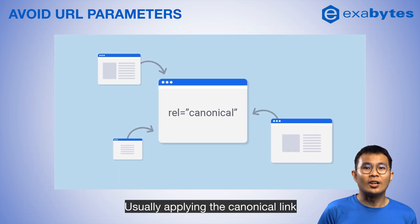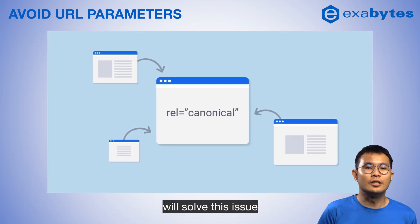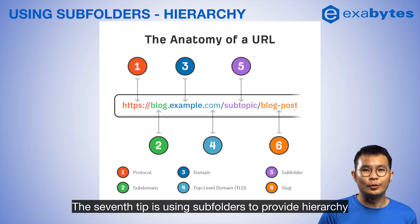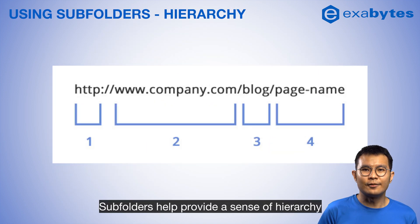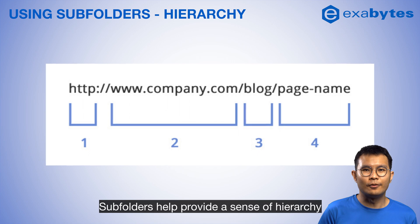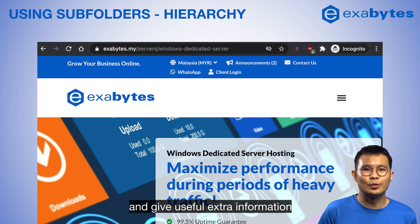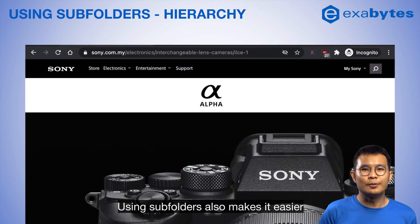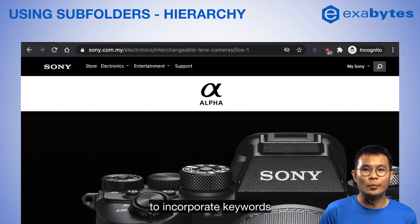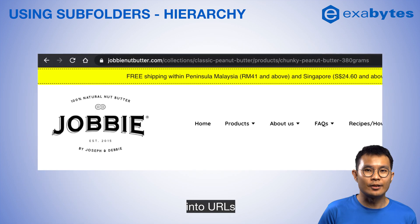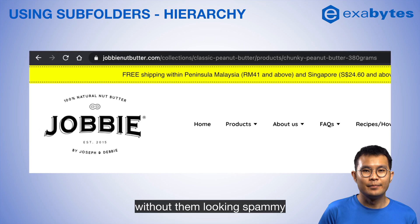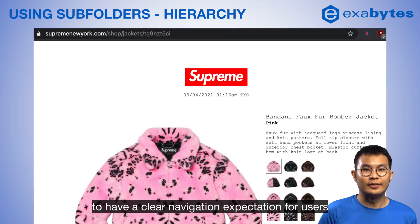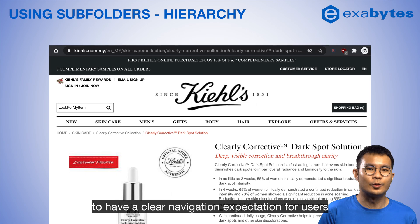Usually applying the canonical link will solve this issue. The seventh tip is using subfolders to provide hierarchy. Subfolders help provide a sense of hierarchy and give useful extra information. Using subfolders also makes it easier to incorporate keywords into URLs without them looking spammy. This format is essential for any online store to have clear navigation for users.